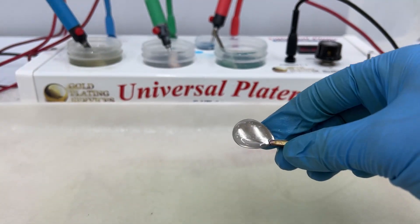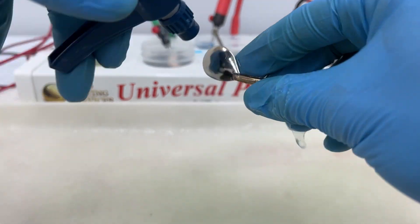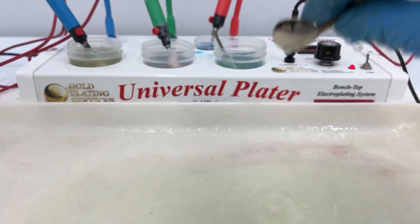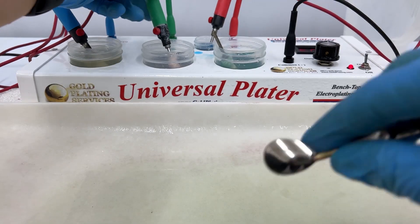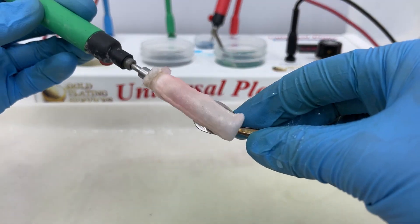Then we'll spray off our part with distilled water to make sure it is nice and clean. Now I'm going to surface activate my piece.